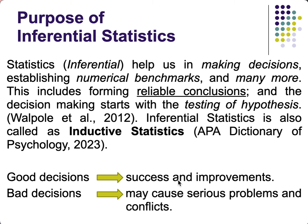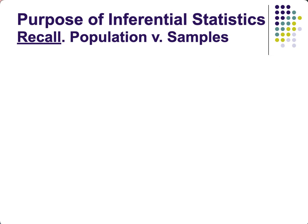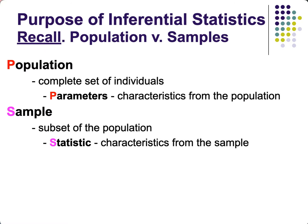Good decisions always give us success and improvements, while bad decisions cause serious problems and conflicts. To proceed, we need to recall the concepts of population and sample. Population is the complete set of individuals, organizations, or organisms that you are getting data from.